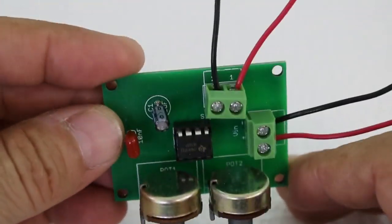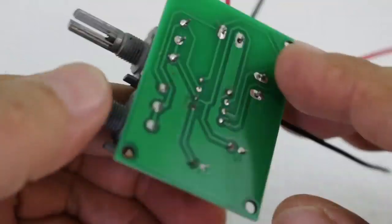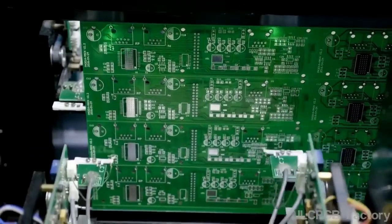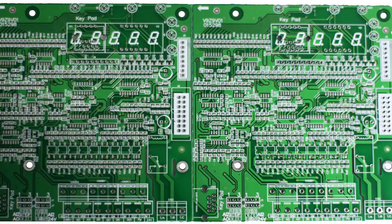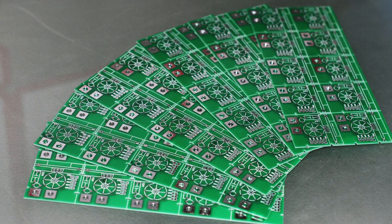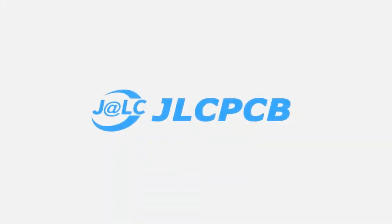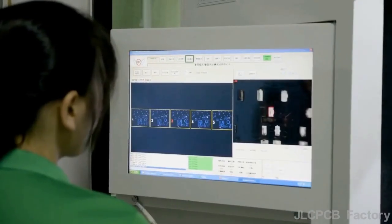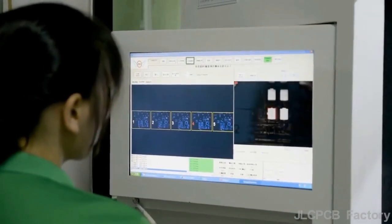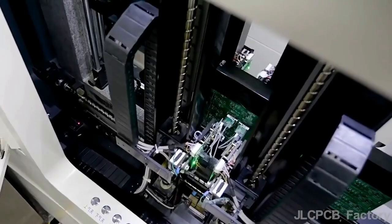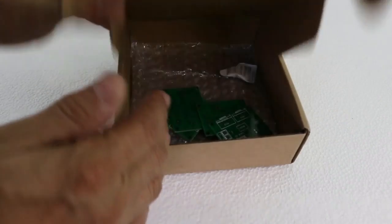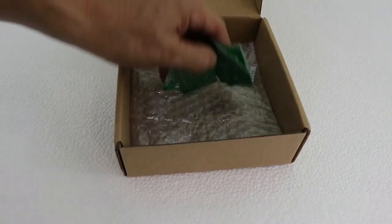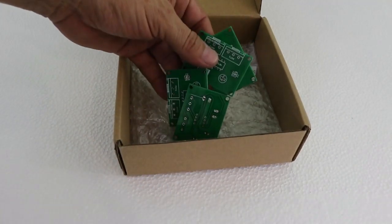Next time you need a PCB for your electronics project, consider using the professional services of JLC PCB. JLC PCB is the world leader in PCB fabrication. You can order online. You just need to register, upload your Gerber file, and wait a few days for your PCBs at an unbeatable price.